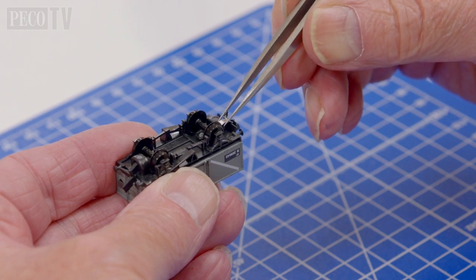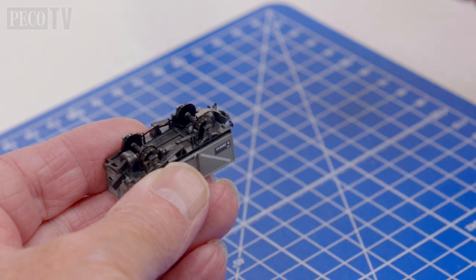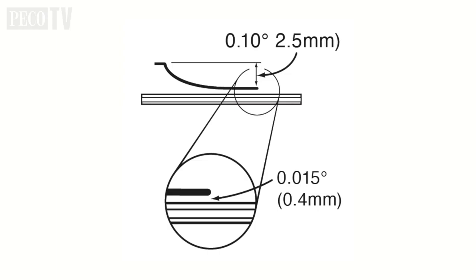To achieve optimum performance, adjust the tail of the arm so that it rests 0.4mm above the rail as shown in the diagram.